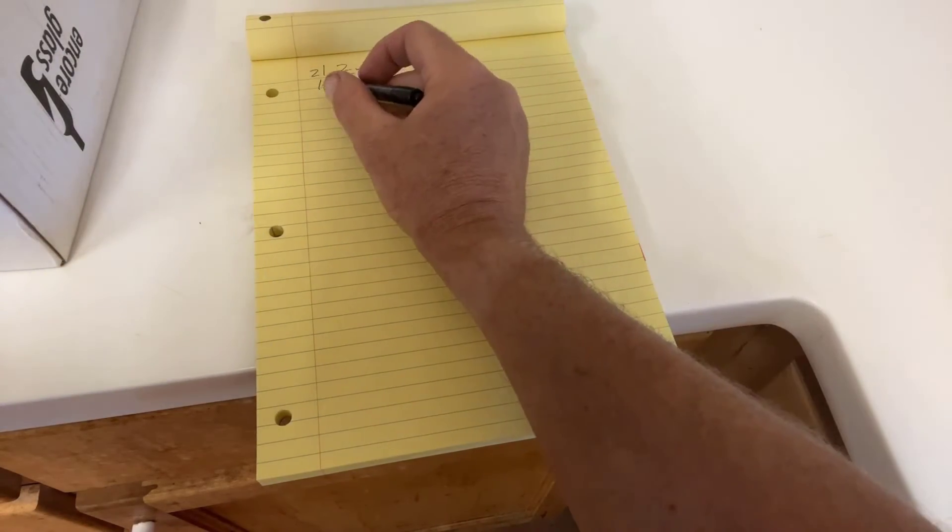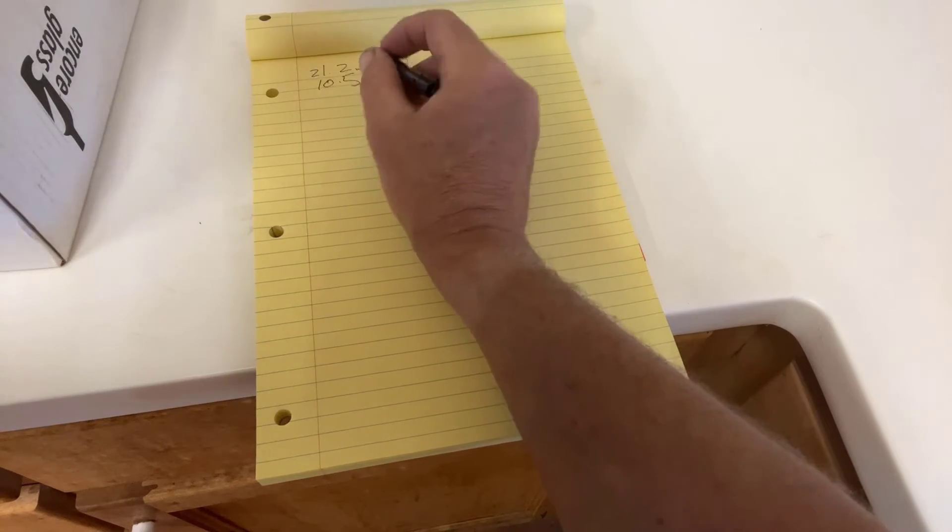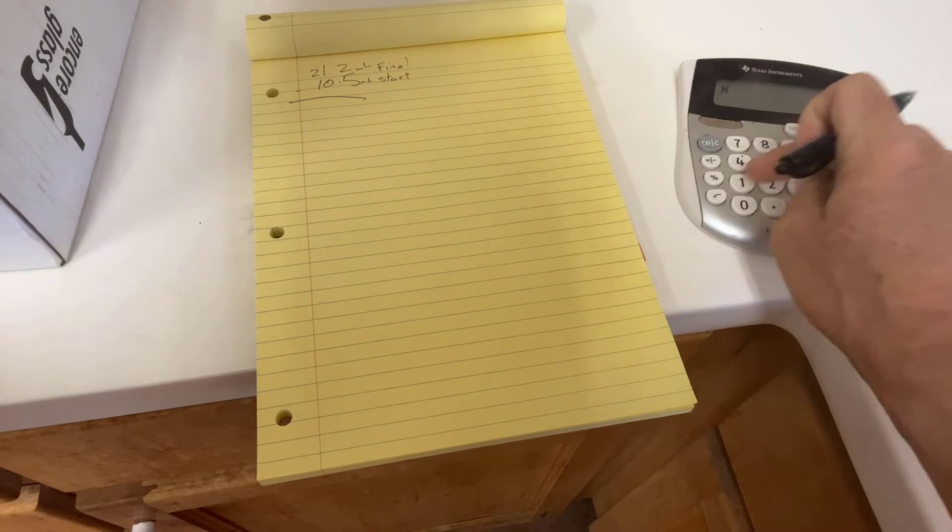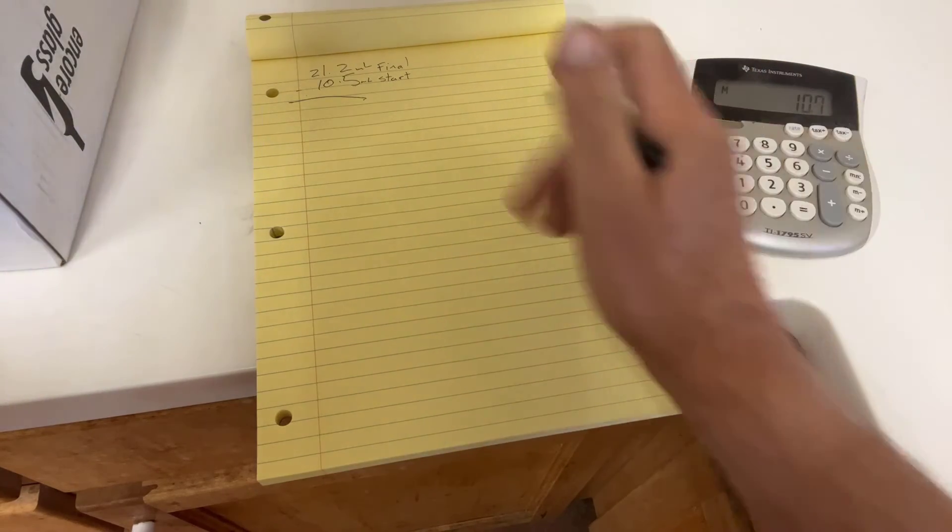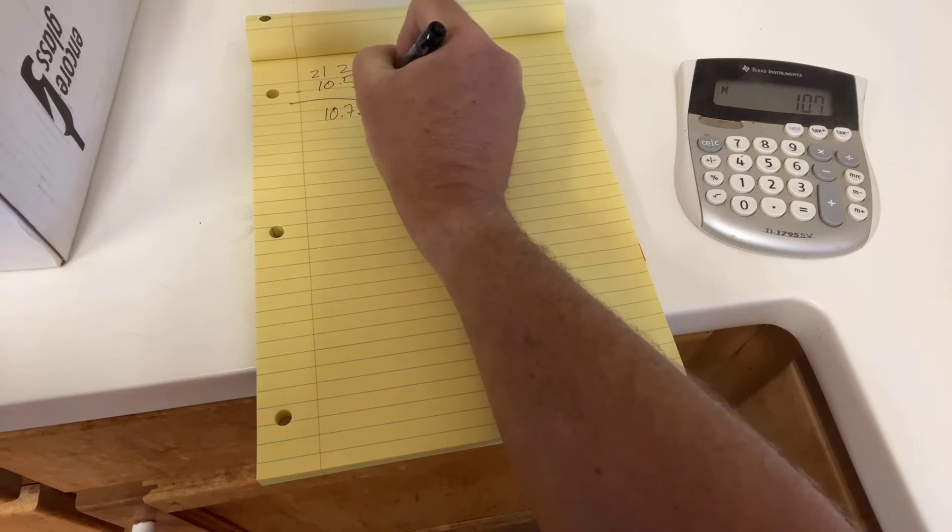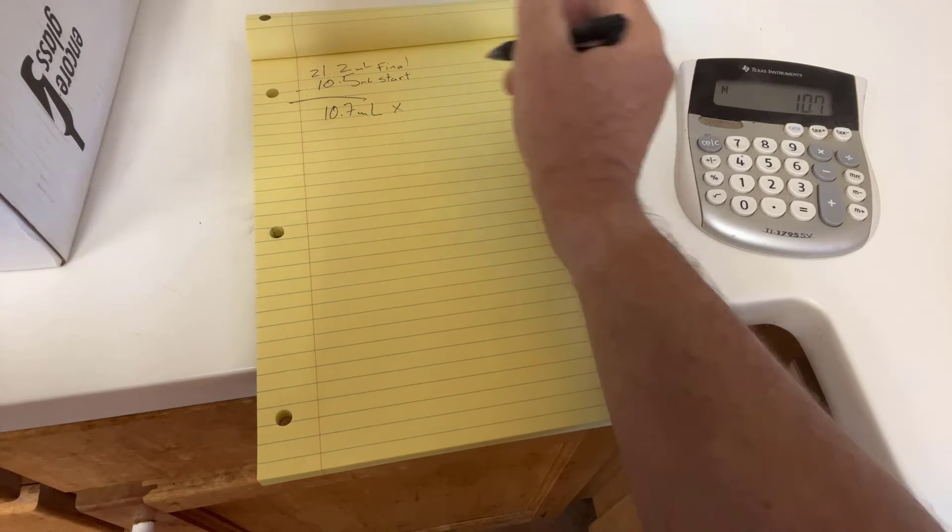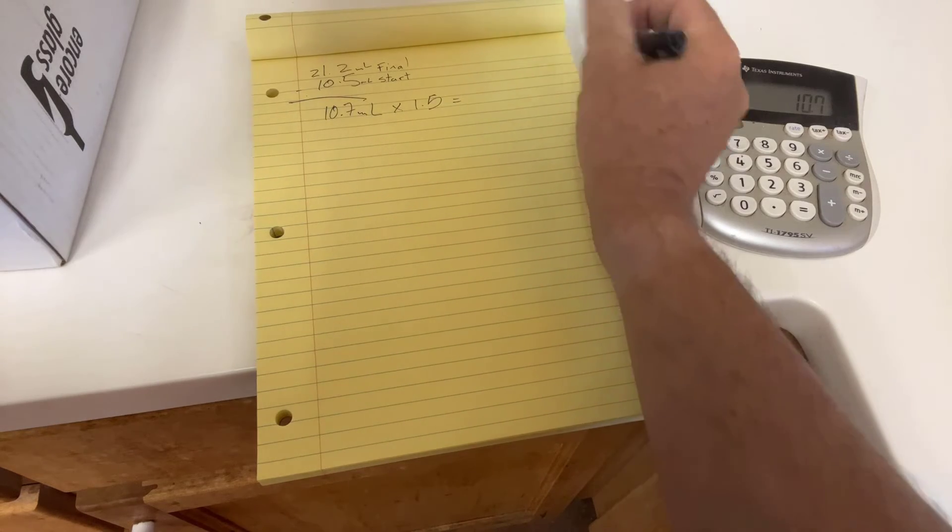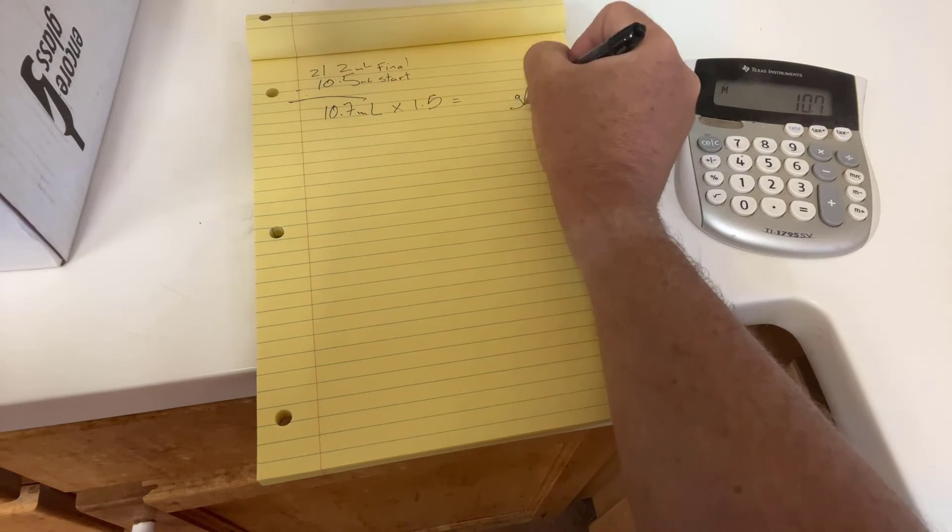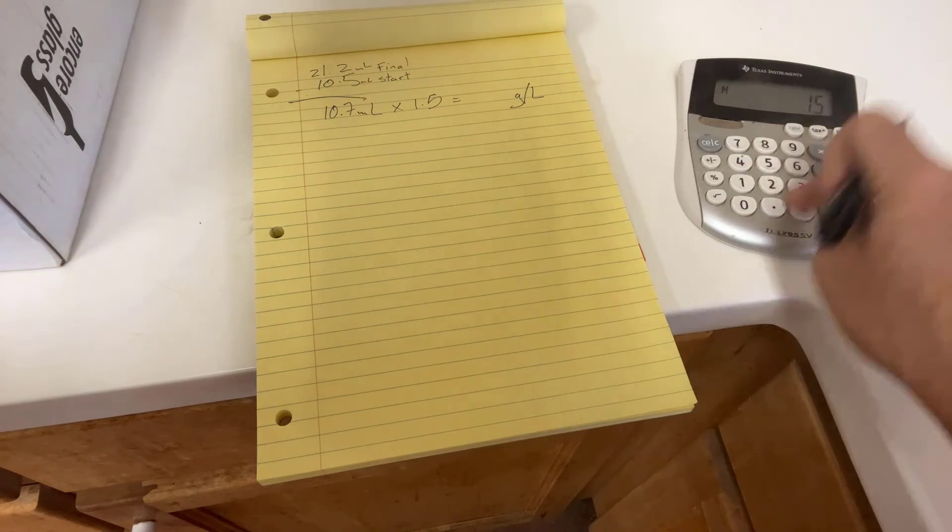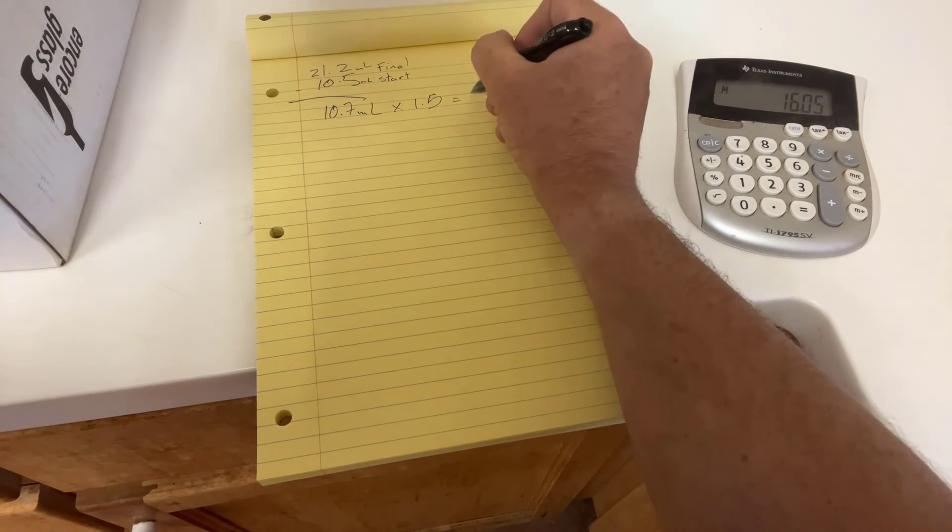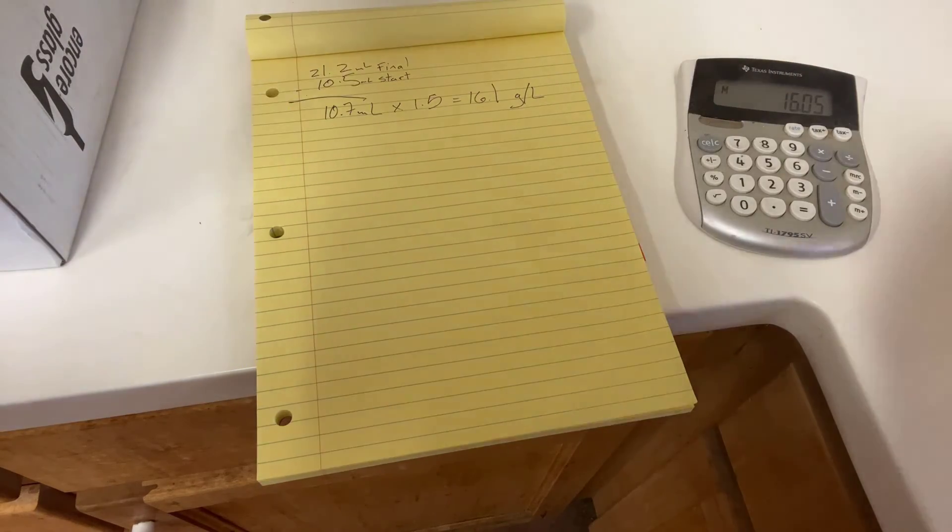Okay. Here's how things are calculated based on using 0.1 normal sodium hydroxide and 5 milliliters of juice sample. The burette started at 10.5 milliliters, ended at 21.2. So we're going to take that delta: 21.2 minus 10.5 equals 10.7 milliliters. We're going to multiply that 10.7 by 1.5, and that is going to tell us grams per liter of TA. 16.05. So we're going to round that up to 16.1 grams per liter TA.